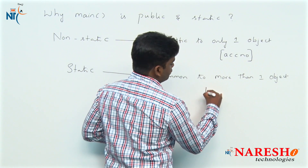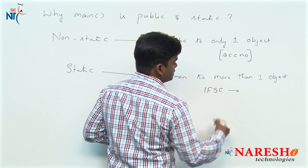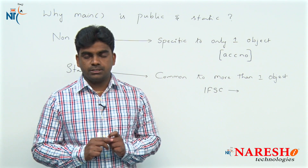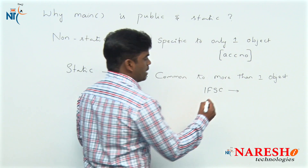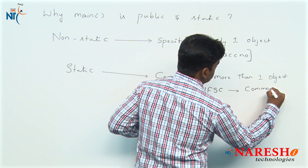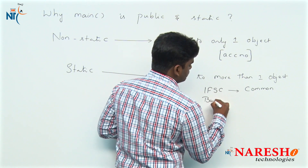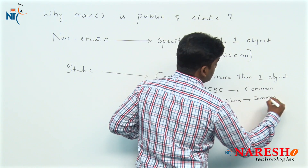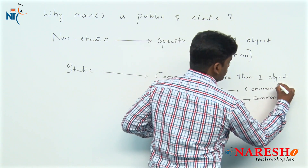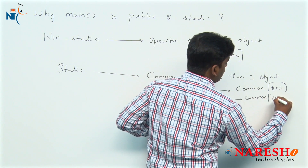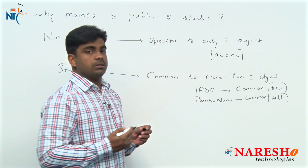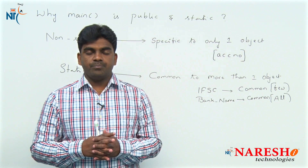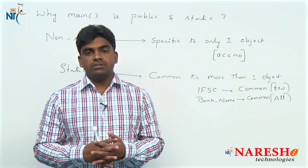For example, take an IFSC code — it is common, but only for the account holders belonging to one particular branch. And take the bank name — the bank name is common for all. Both are common, but to how many people differs. One thing is common to few, and another thing is common for all — so how can we represent that?